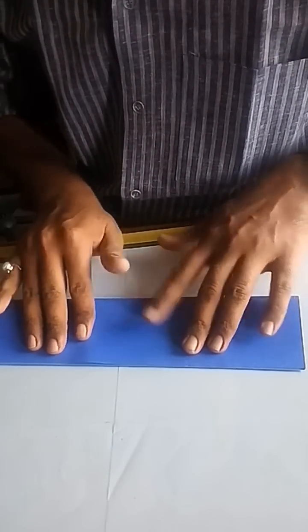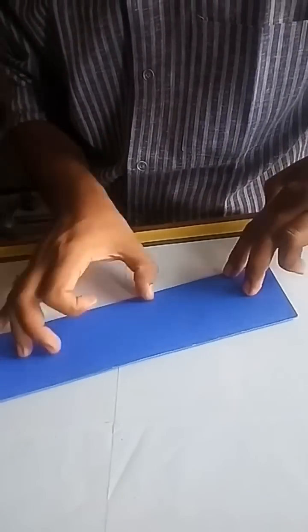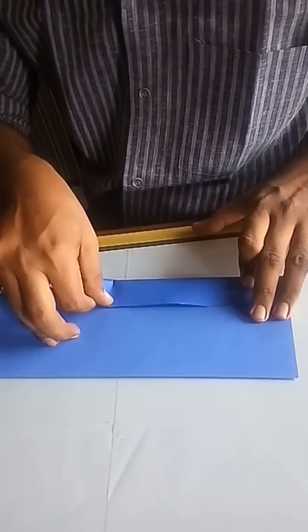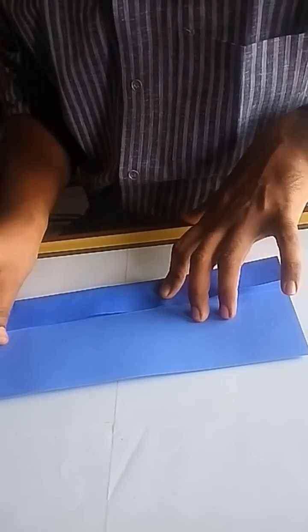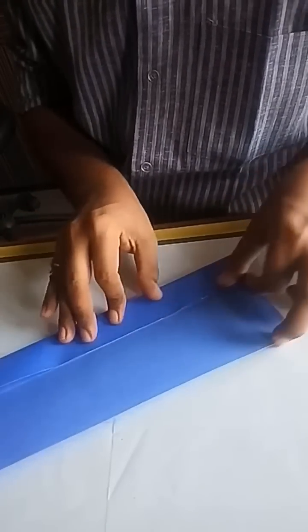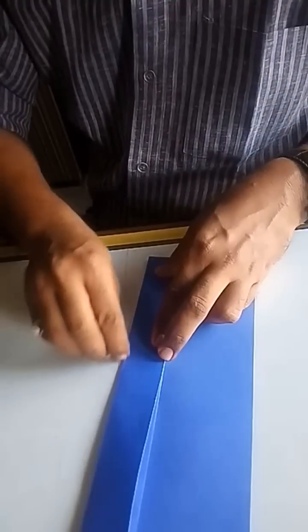Now take the other identical rectangular sheet and fold it again to form 32 identical squares. Cut the other two squares as we have done in the first sheet.